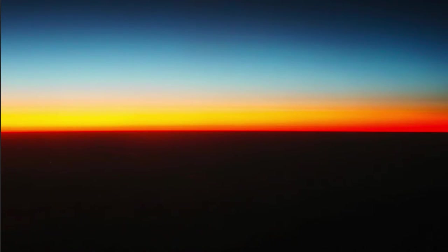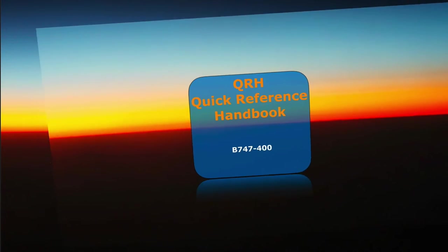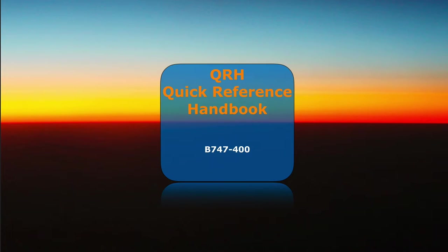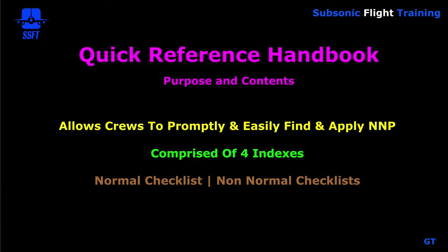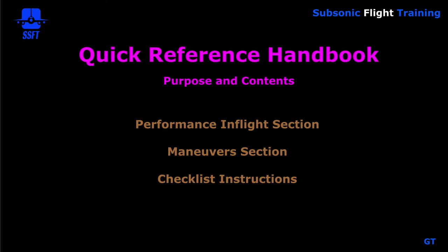Our briefing today will cover the Quick Reference Handbook, or QRH, for the 747-400. The QRH allows crews to promptly and easily find and apply non-normal procedures. There are four indexes contained within it, as well as a normal checklist, non-normal checklists for all systems, a performance in-flight section, a maneuver section, and checklist instructions.